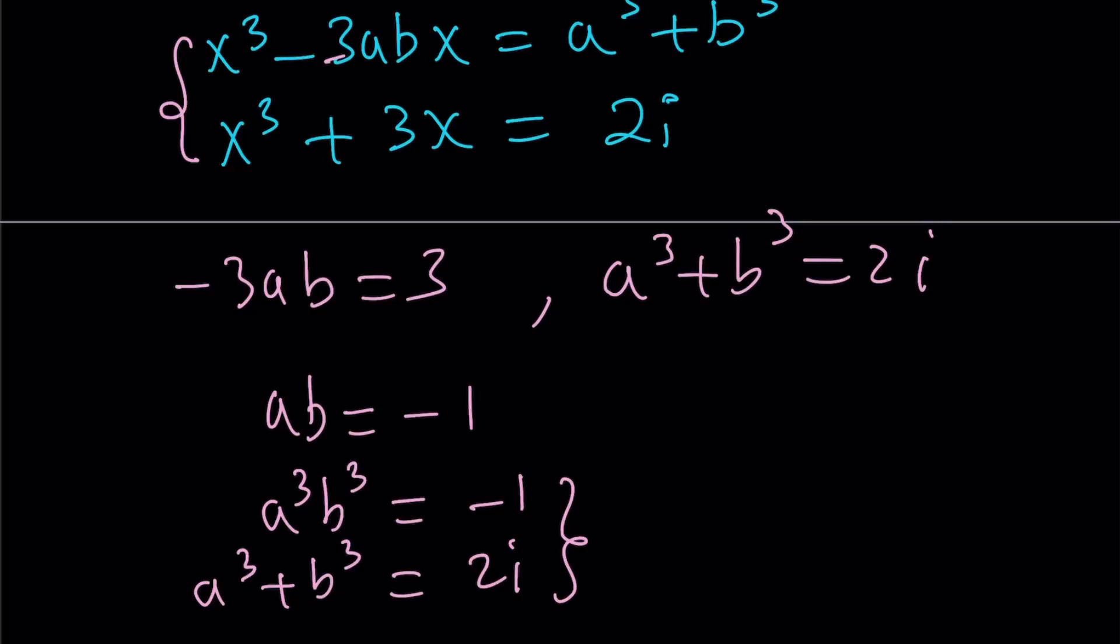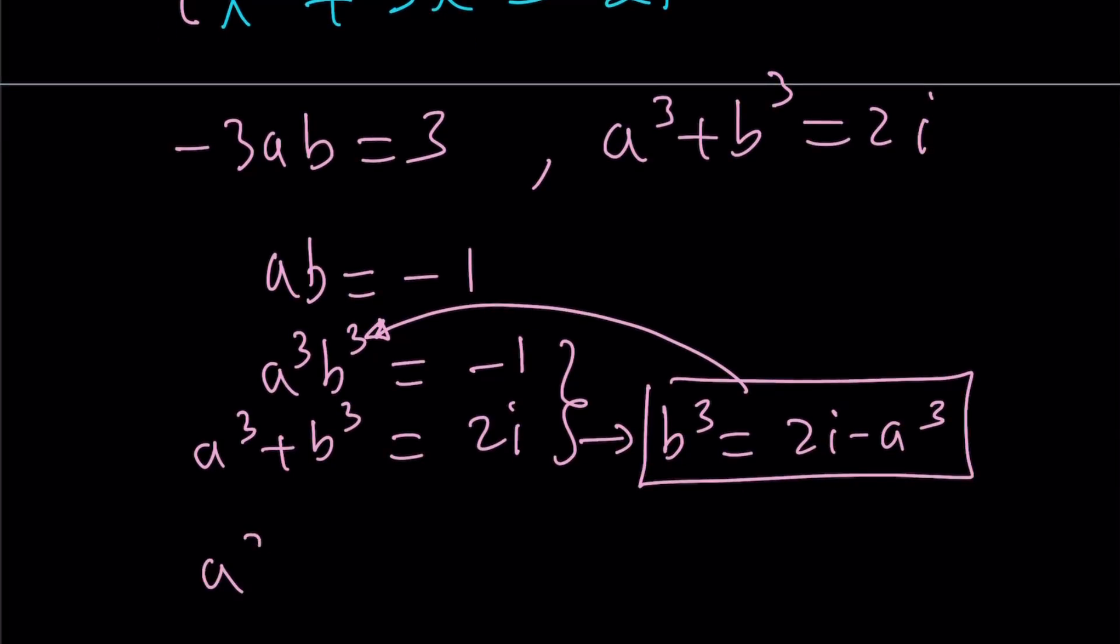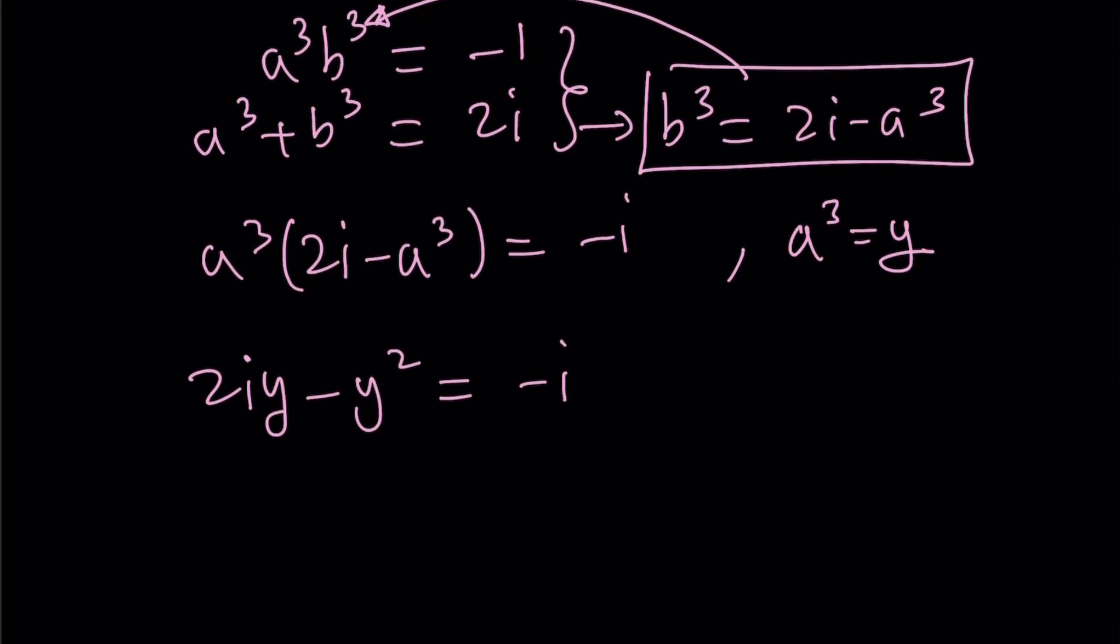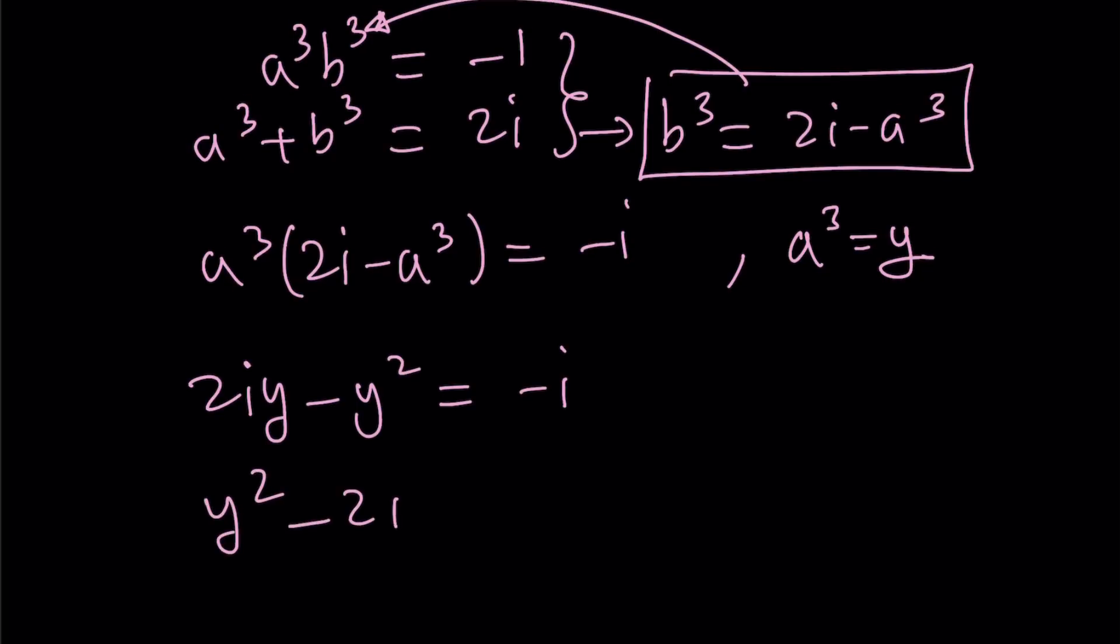So that's going to give us a cubed times 2i minus a cubed equals negative 1. And then if you distribute, let's set a cubed equal to y. You get 2iy minus y squared equals negative 1. Let's put everything on the positive side of y squared. y squared minus 2iy minus 1 is equal to 0.